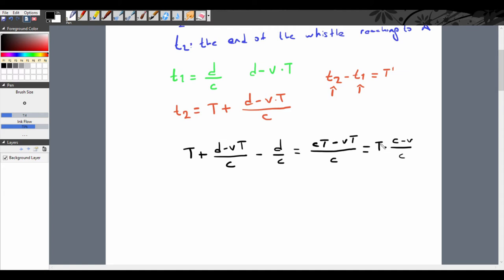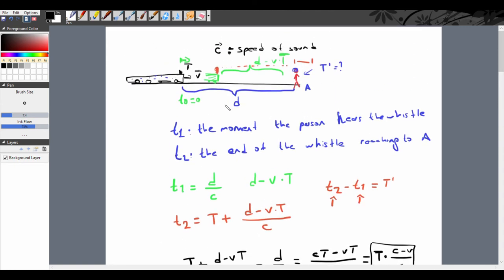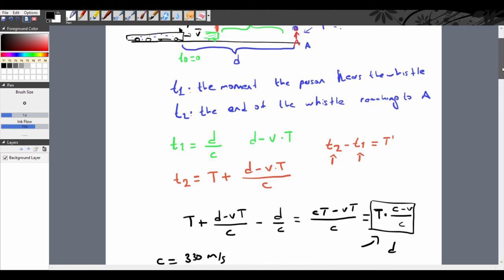If you look at this expression, it is a coefficient for T. Let us give some numbers. Let us call c, the speed of sound, 330 meters per second, and v, 30 meters per second. As you see, we do not need b. Although I have given d to you, we did not require it in the answer.